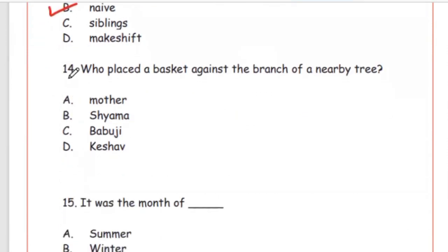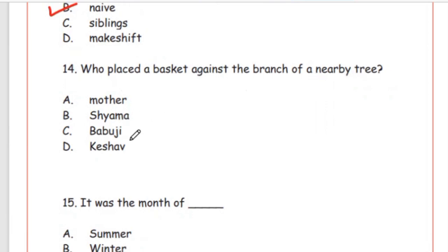Question 14: Who placed a basket against the branch of a nearby tree to provide shade? Options: mother, Shiyama, Babuji, or Keshav. The answer is Option D, Keshav.